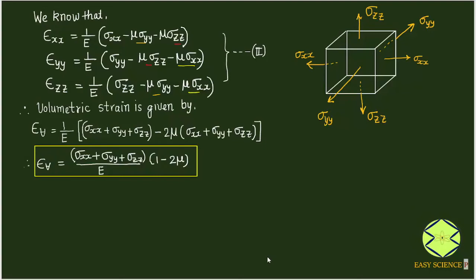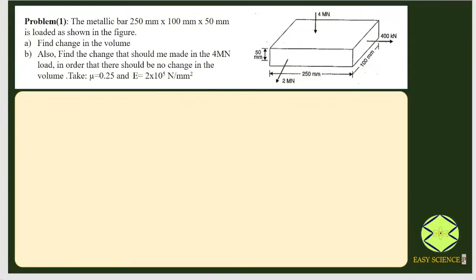To make this concept clear, we will take a few numerical examples. We have a metallic bar having dimensions 250 mm length, 100 mm width, and 50 mm thickness or height. We can mark this as x direction along length, y direction along breadth, and z direction along height.